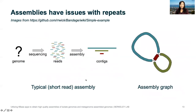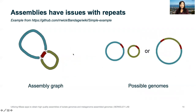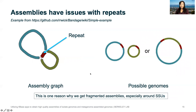To explain why you need long reads: here is a typical short read assembly. You get your DNA sequence, assemble the reads into contigs, and modern assemblers will output these assembly graphs. This particular graph represents three different possibilities for a genome — the green one with the red piece, the blue one with the red piece, or traversing the entire graph. The reason you have these three possibilities is because the red piece is a repeat.